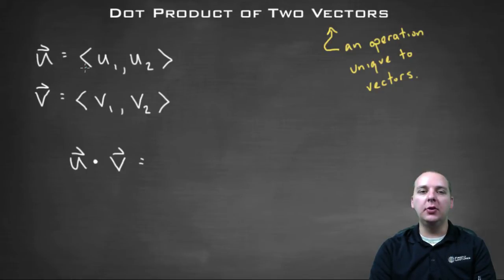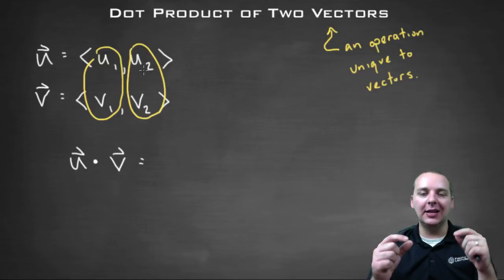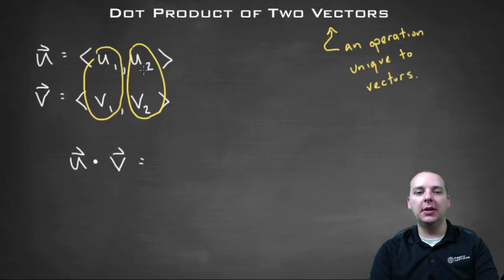Let's say vector u is the vector u1 comma u2, and vector v is v1 comma v2. To take their dot product, what you're going to do is multiply the ith components and the jth components, get those products, and then add the result together.